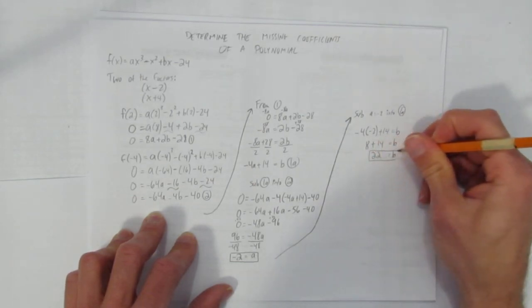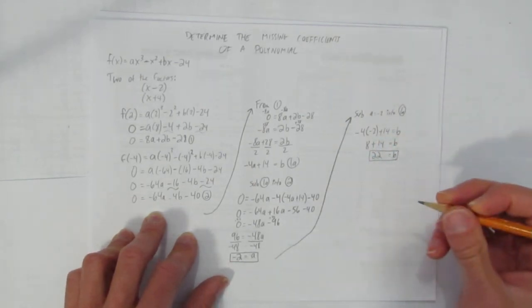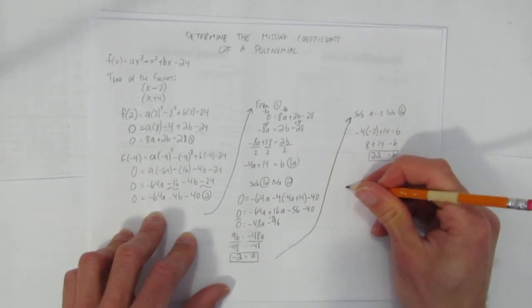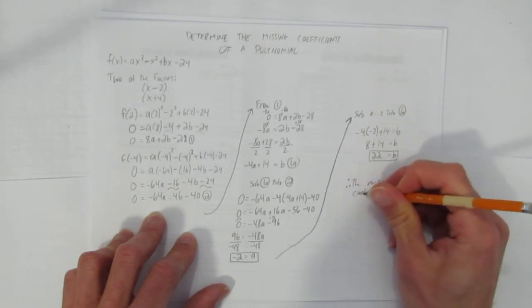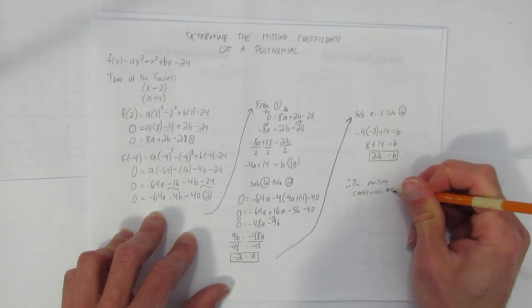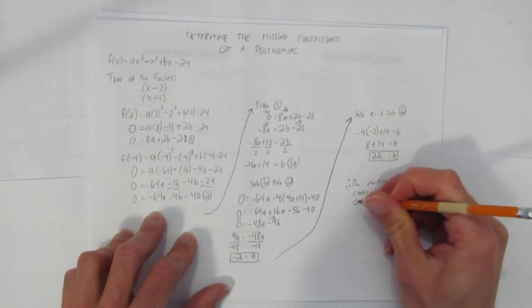If it just said, solve for the coefficients, that's not really a word problem. But just in case, I'll put it there for a statement. The missing coefficients are a equals negative 2 and b equals 22.